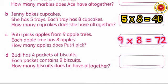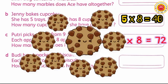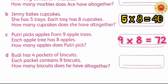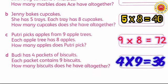Next, part D — the method is the same as before. Budi has 4 packs of biscuits, and each pack contains 9 biscuits. So the answer is 4 times 9 equals 36.